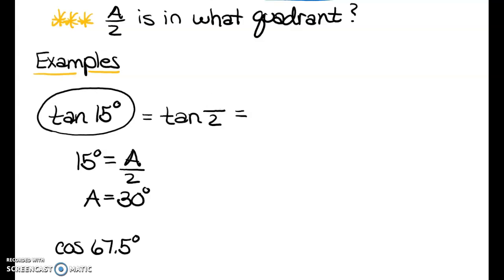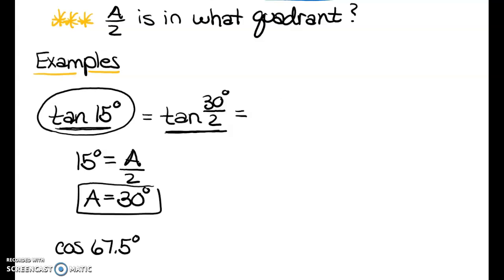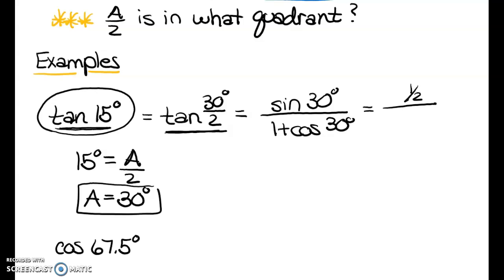So A is 30 degrees. Tangent of 15 degrees equals tangent of 30/2, which checks out. I have a choice of any of the tangent formulas. I'm going to choose one that doesn't require me to pick positive or negative — I'll use the second one: sine of A divided by 1 plus cosine of A. With A = 30°, that gives sine of 30°, which is 1/2, divided by 1 plus cosine of 30°.